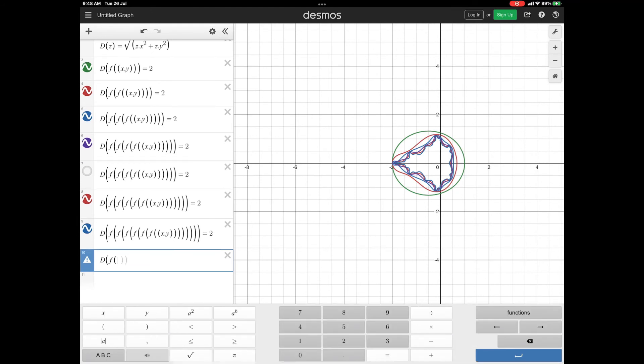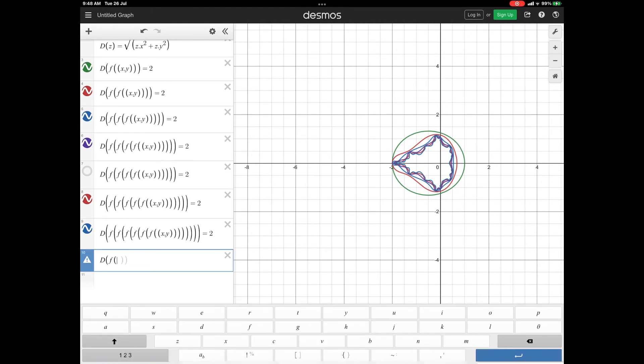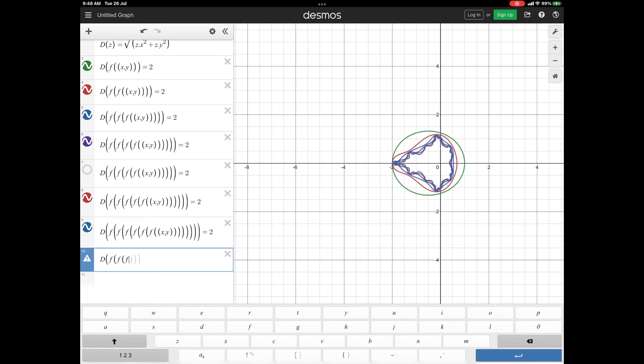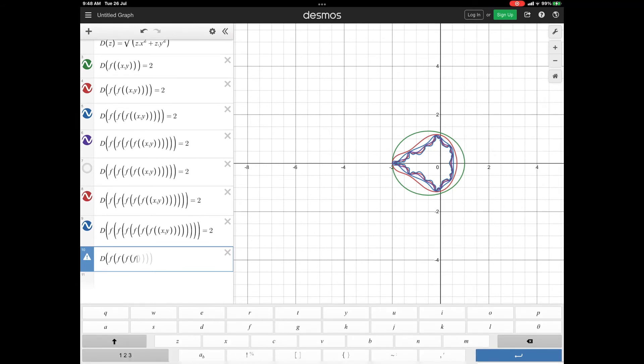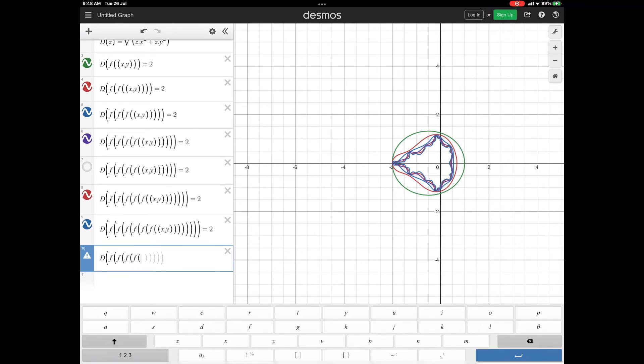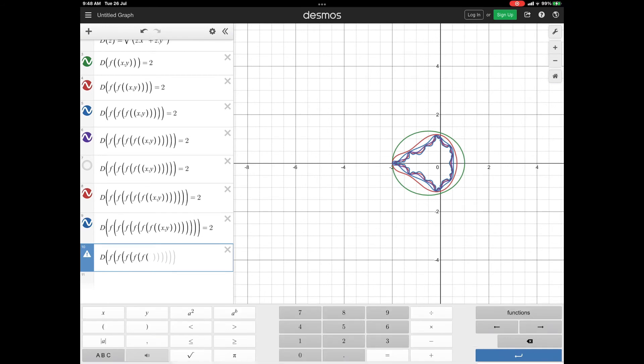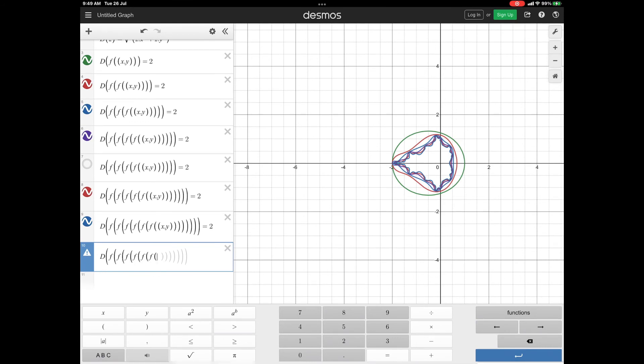So, finally, clouds are not spheres. Mountains are not cones. Coastlines are not circles. And bark is not smooth. Nor does lightning travel in a straight line. They are all fractal geometry in nature.